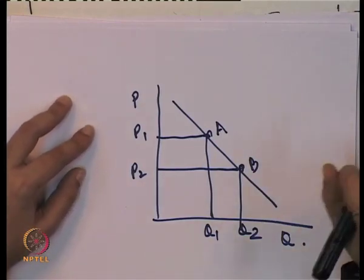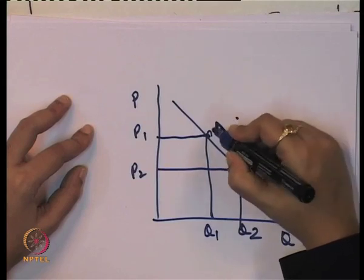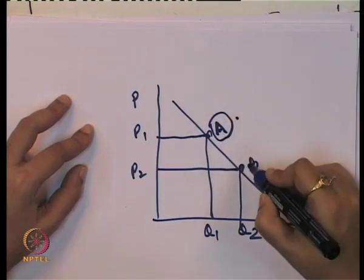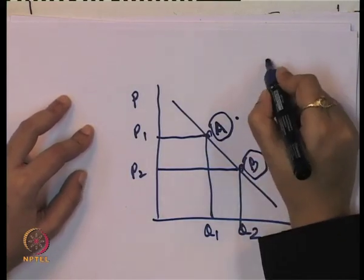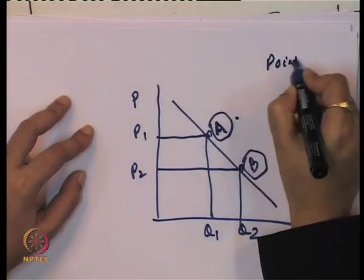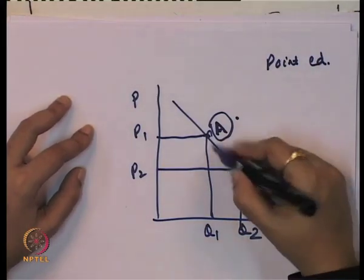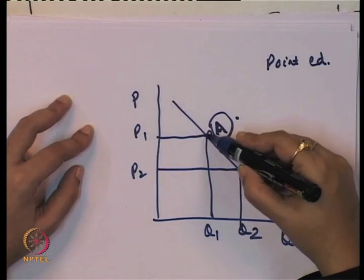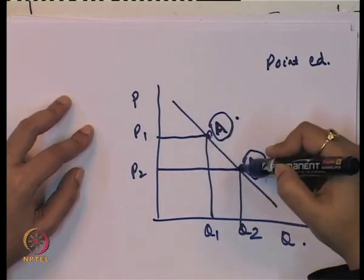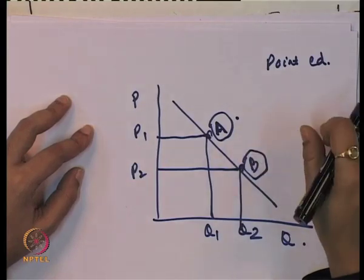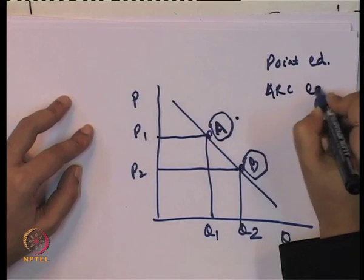When we compute the price elasticity of demand at an individual point — either at point A or point B — this is known as point elasticity of demand. When we measure the elasticity of demand in a segment, like between A and B on the linear demand curve, that is generally known as arc elasticity of demand.